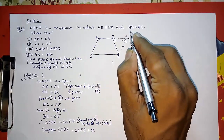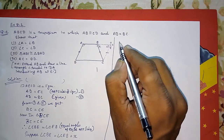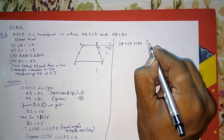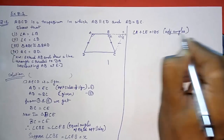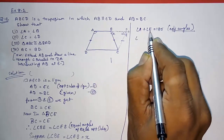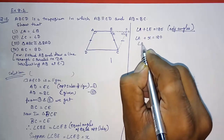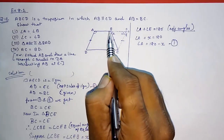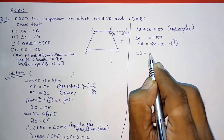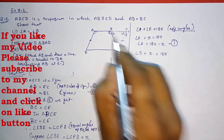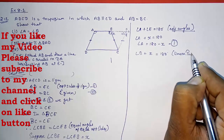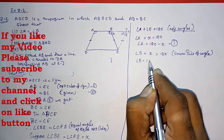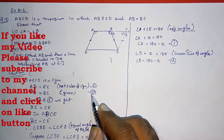Now, the sum of adjacent angles of a parallelogram is 180 degrees, so angle A plus angle E equals 180 degrees. Since angle E equals X, we get angle A plus X equals 180 degrees, therefore angle A equals 180 minus X — this is Result 1. Again, angle B plus X equals 180 degrees by linear pair of angles, so angle B equals 180 minus X — this is Result 2.